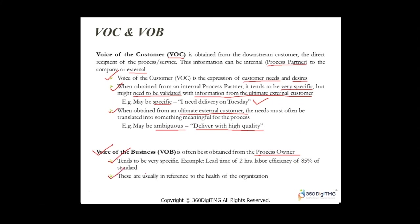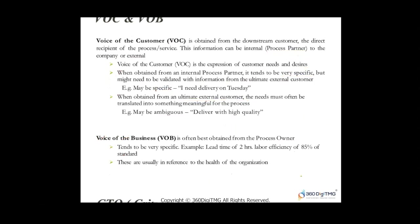These measures are usually in reference to the health of the organization — how it is performing. You might also want to look into process cost efficiency and repair costs, which are primarily derived from the Voice of Business. Once you have Voice of Customer and Voice of Business in place, you need to move on to identifying what is Critical to Quality for you.